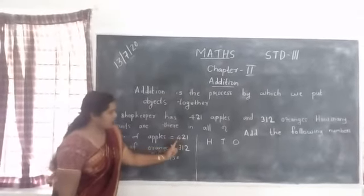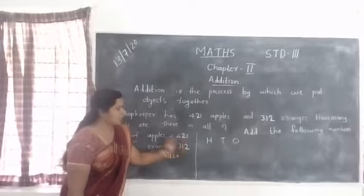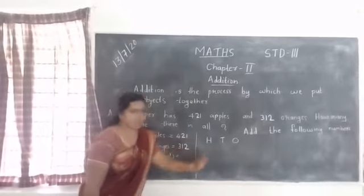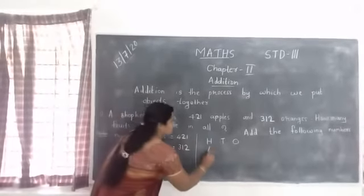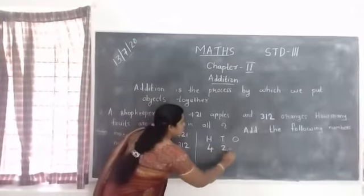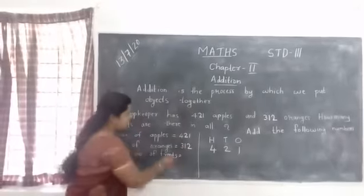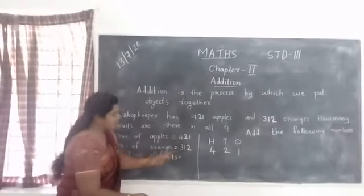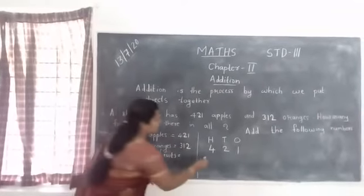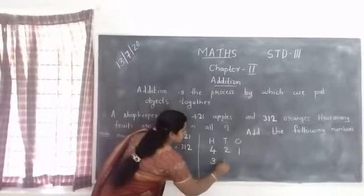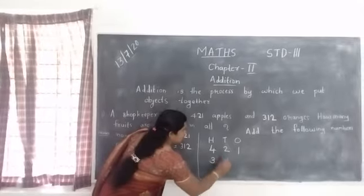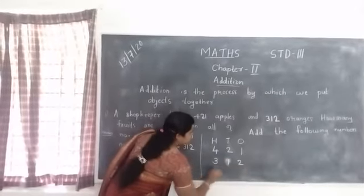First we have to arrange 421 according to the place value: 4, 2, 1. Then this number 312: 3, 1, 2.